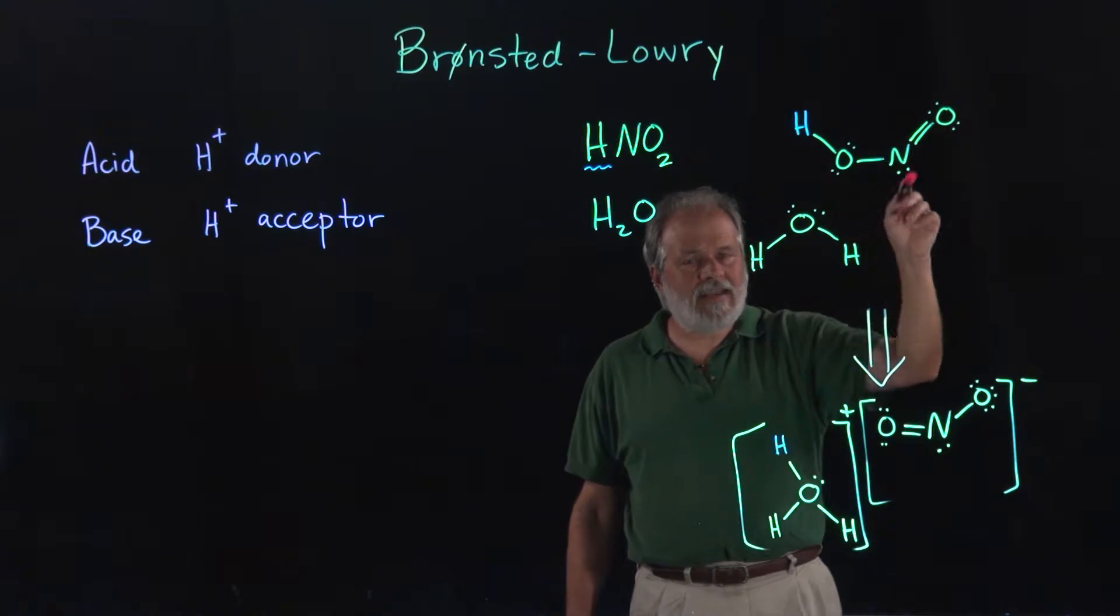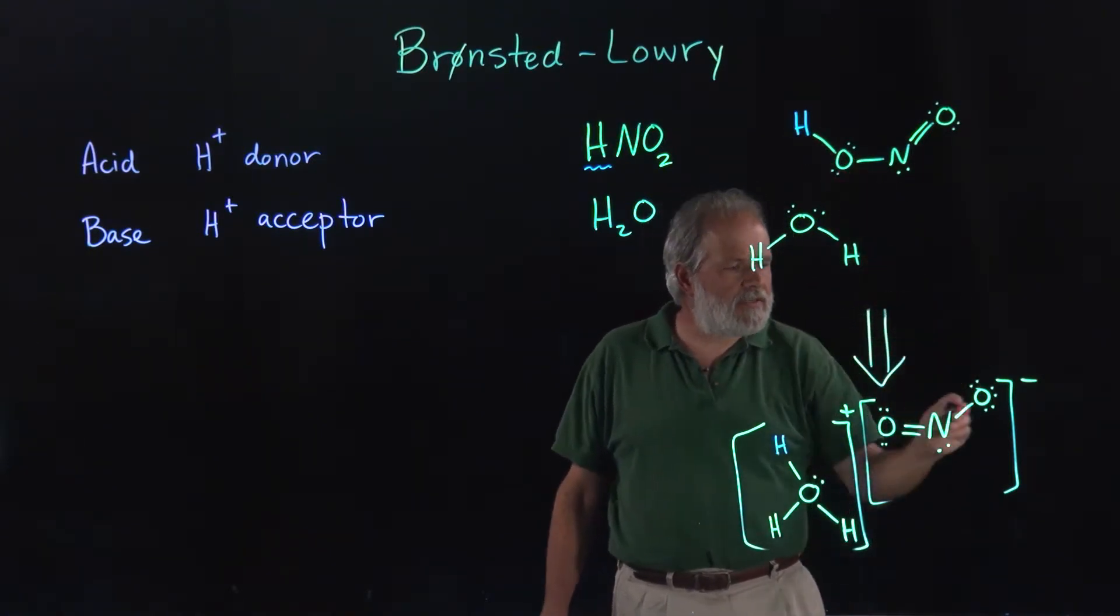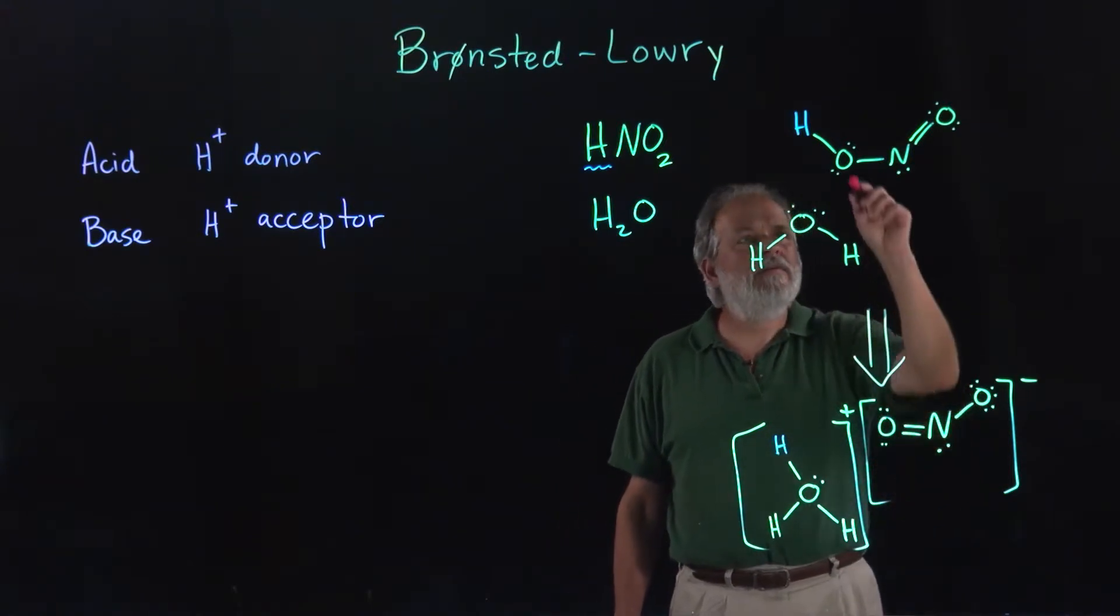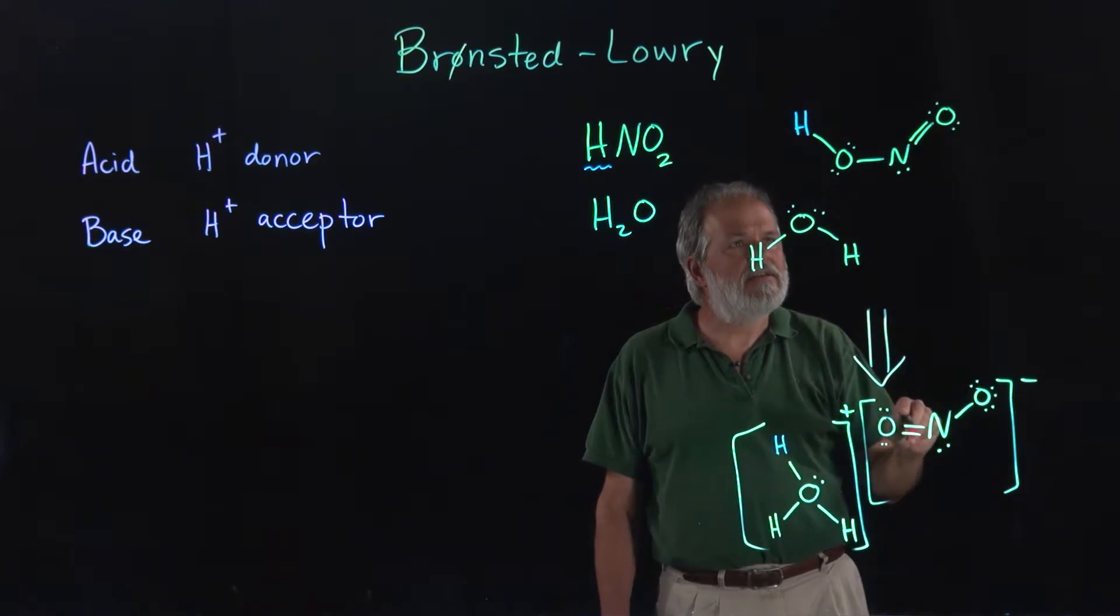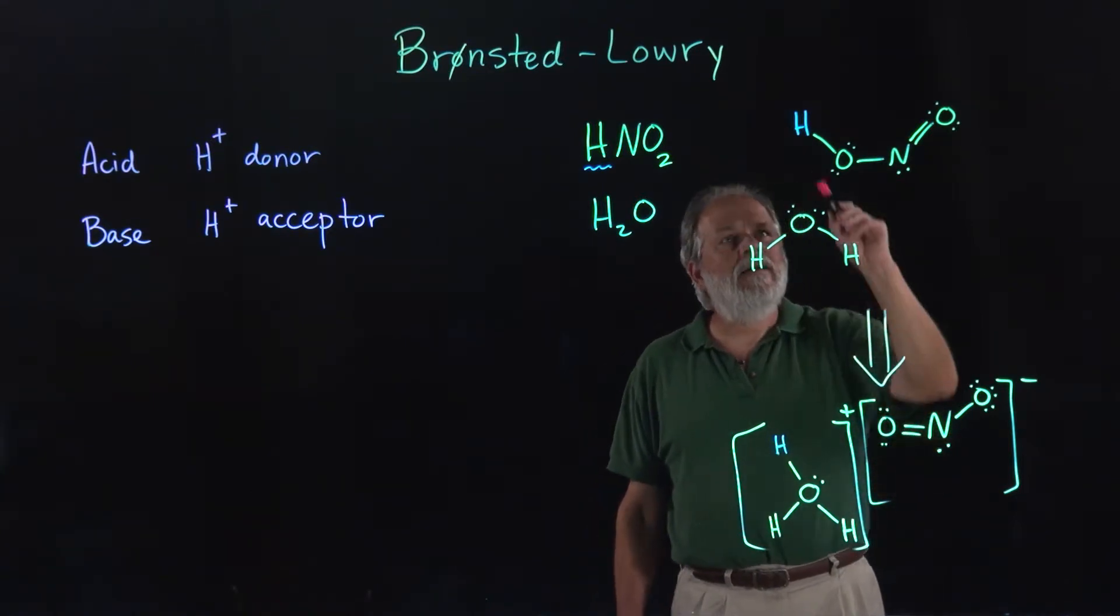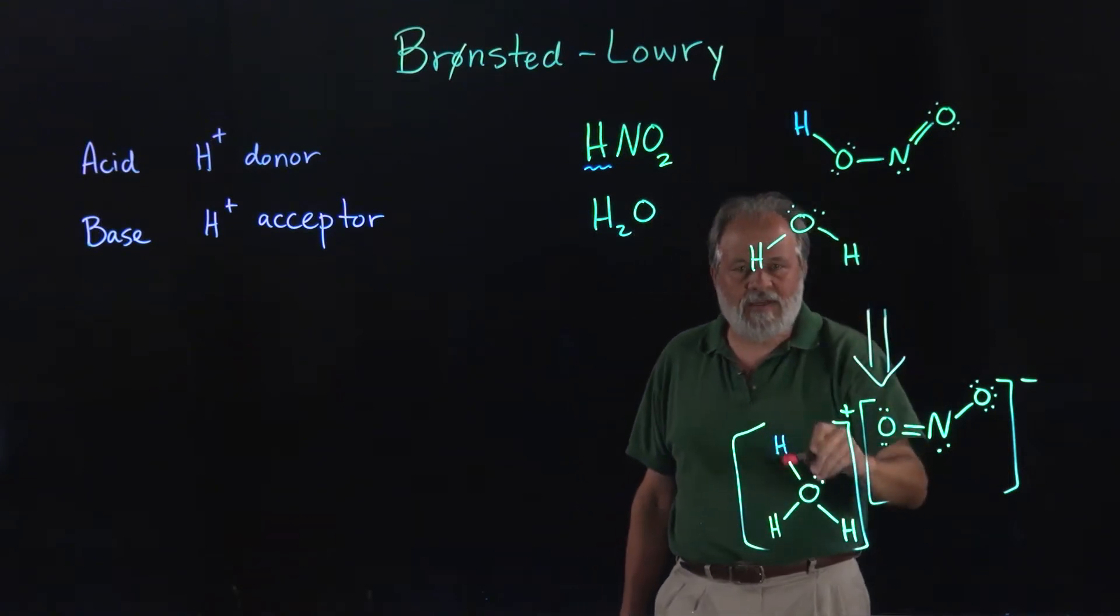So the oxyacids, the acidic protons are always in an OH bond, and when the OH bond breaks you get an O minus. So you go from nitrous acid to nitrite, so when the proton transfers it attacks one of these lone pairs and forms a covalent OH bond.